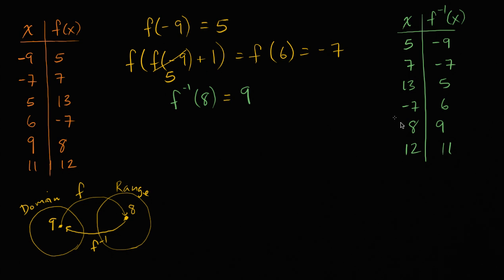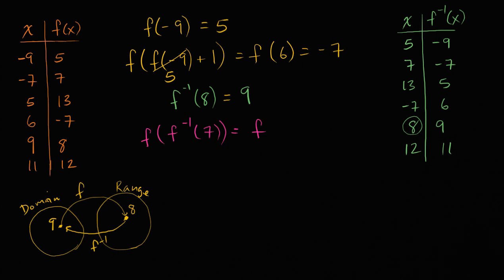So now it becomes a little bit clearer. F inverse of eight — if you input eight into f inverse, you get nine. Now we can use that to start doing fancier things. Let's evaluate f of f inverse of seven. Well, first we evaluate f inverse of seven: f inverse maps from seven to negative seven. So this becomes f of negative seven. And f of negative seven is just going to be seven again.